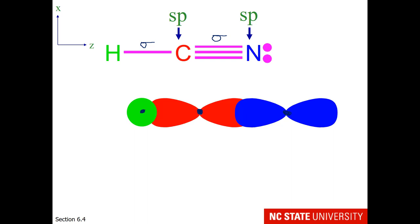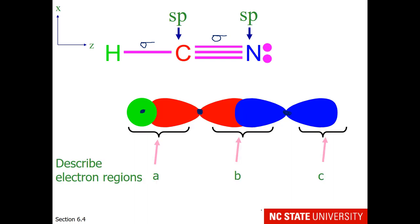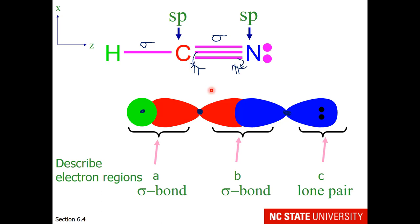I've added the nuclei for clarity. Electron region A is a sigma bond — it's the overlap between hydrogen's 1s orbital and carbon's sp hybridized orbital. Region B is another sigma bond — the overlap of hybrid orbitals belonging to carbon and nitrogen. And what is C doing? Perhaps you notice nitrogen has a lone pair, so that hybrid orbital is holding on to the lone pair.